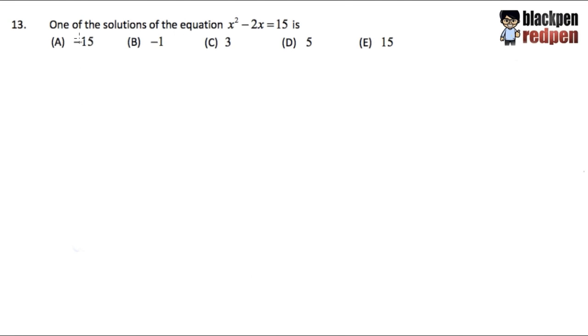For number 13, we are going to find one of the solutions to the equation x squared minus 2x is equal to 15. Well, there's an easy way and there's also the algebra way. I believe many of you guys want to see the easy way first, so let me demonstrate that in this video.